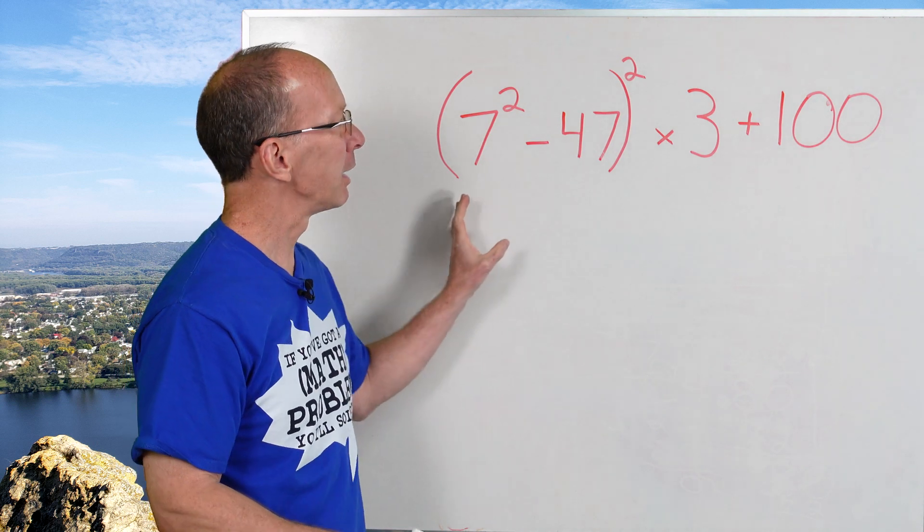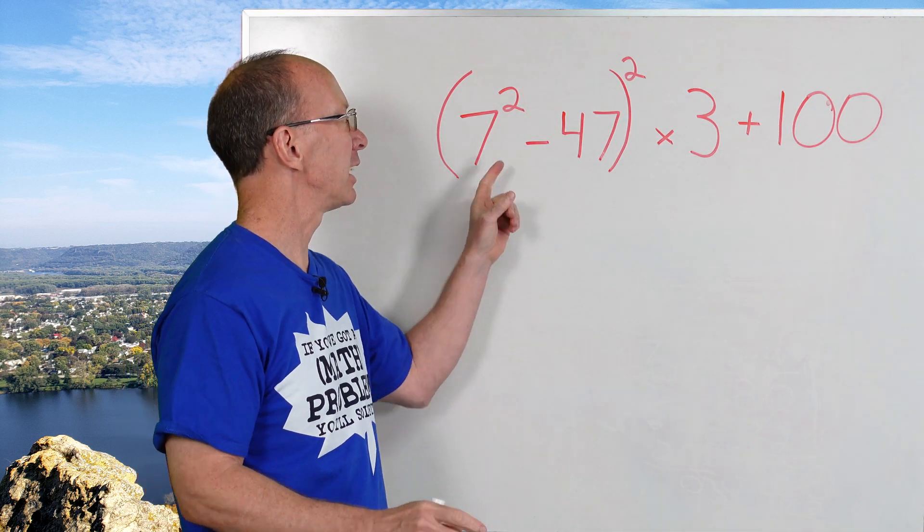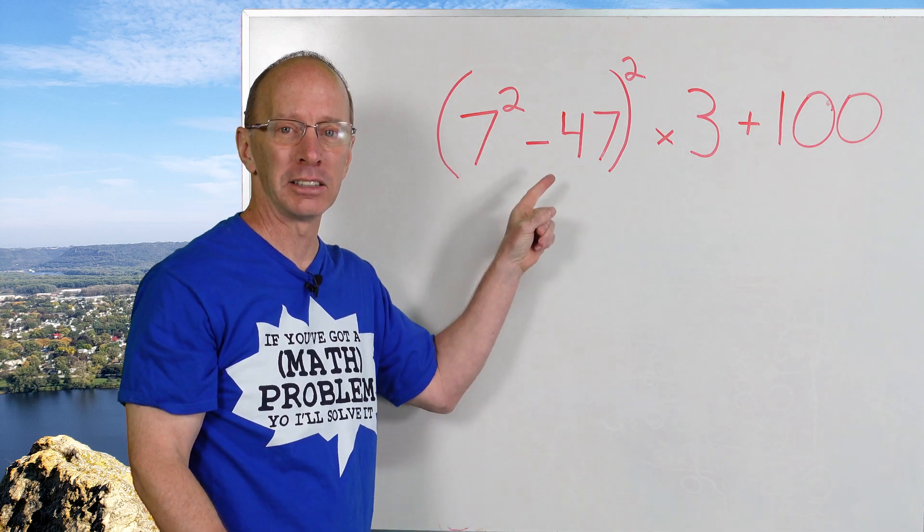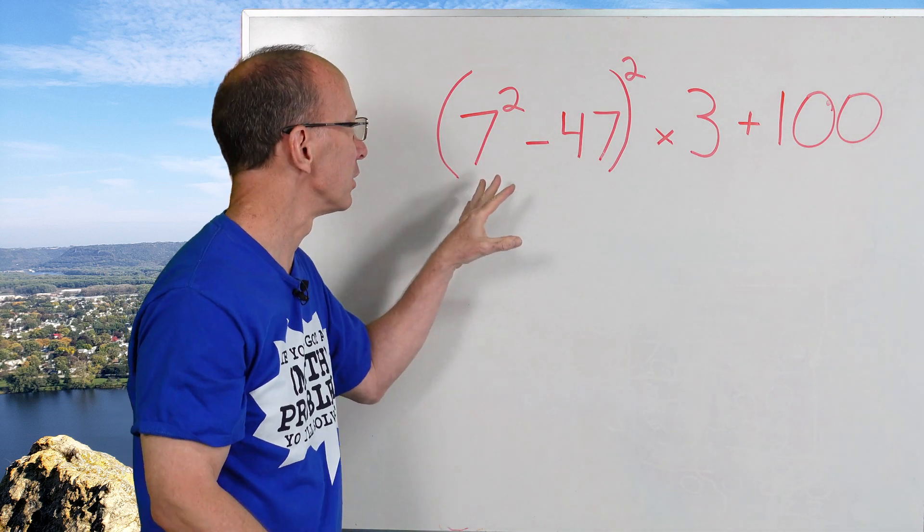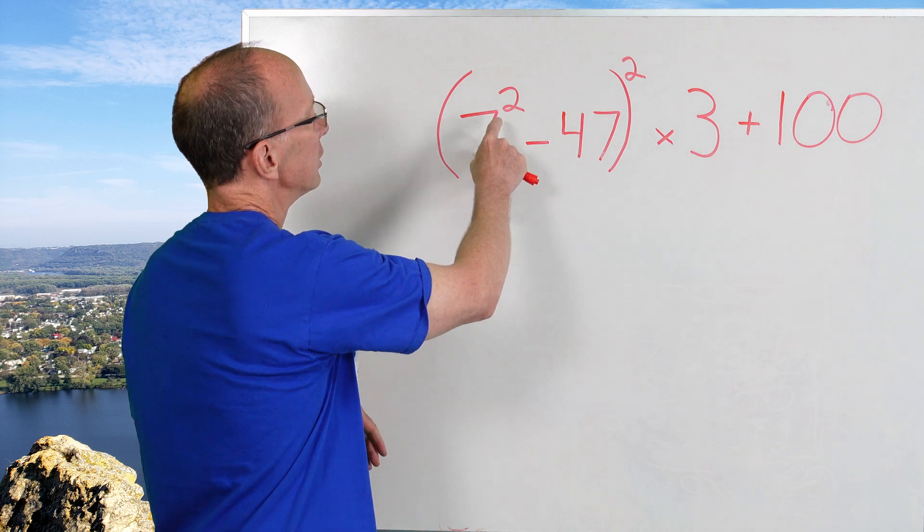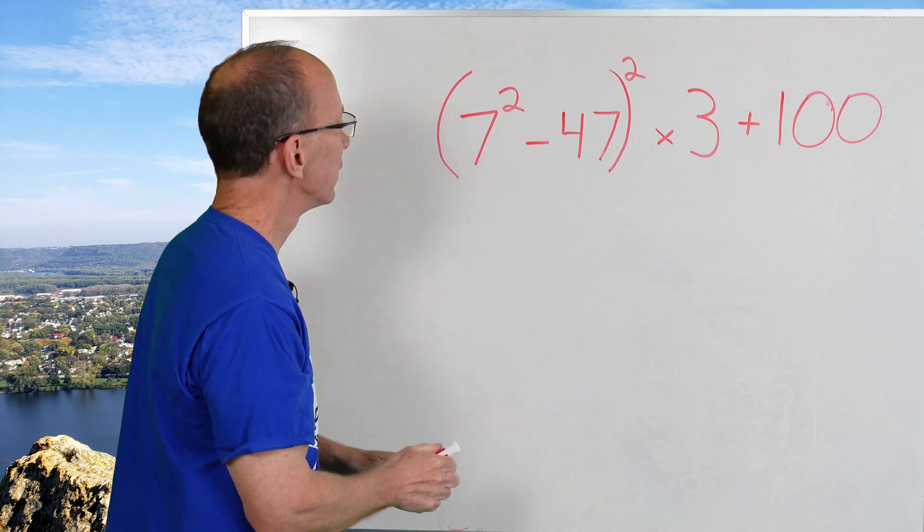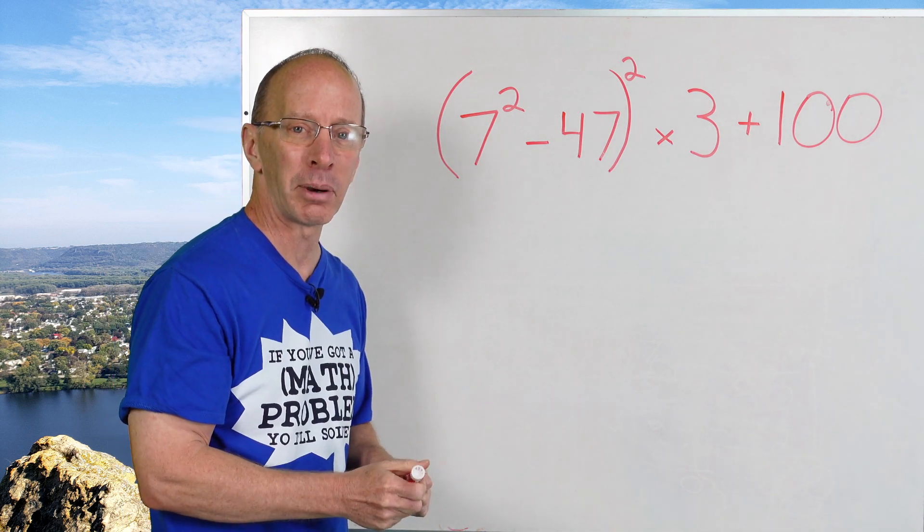So first of all, I'm taking a look at this, and I'm seeing that we have some numbers inside these parentheses. So let's go ahead and do that first. I have 7 to the second power minus 47. So let's go ahead and do that. Remember what 7 to the second power is?